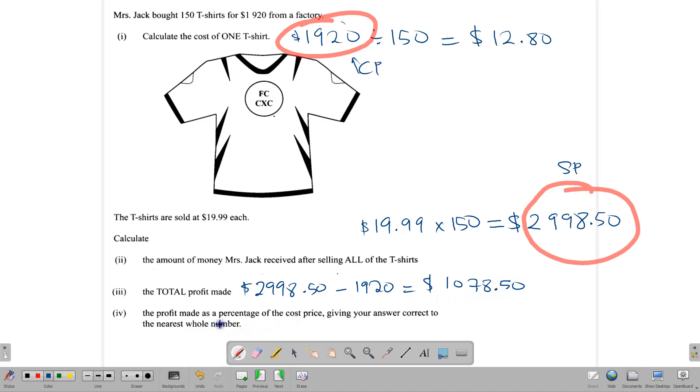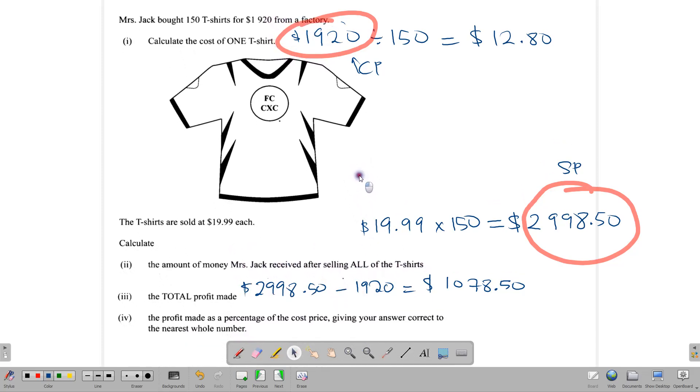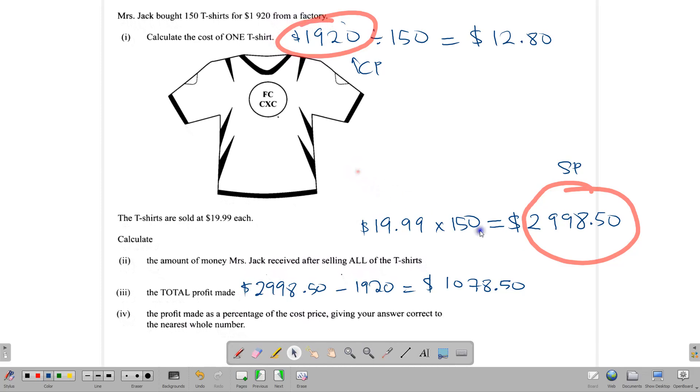And now, the profit as a percentage of the cost price written to the nearest whole number. The profit as a percentage of the cost price.